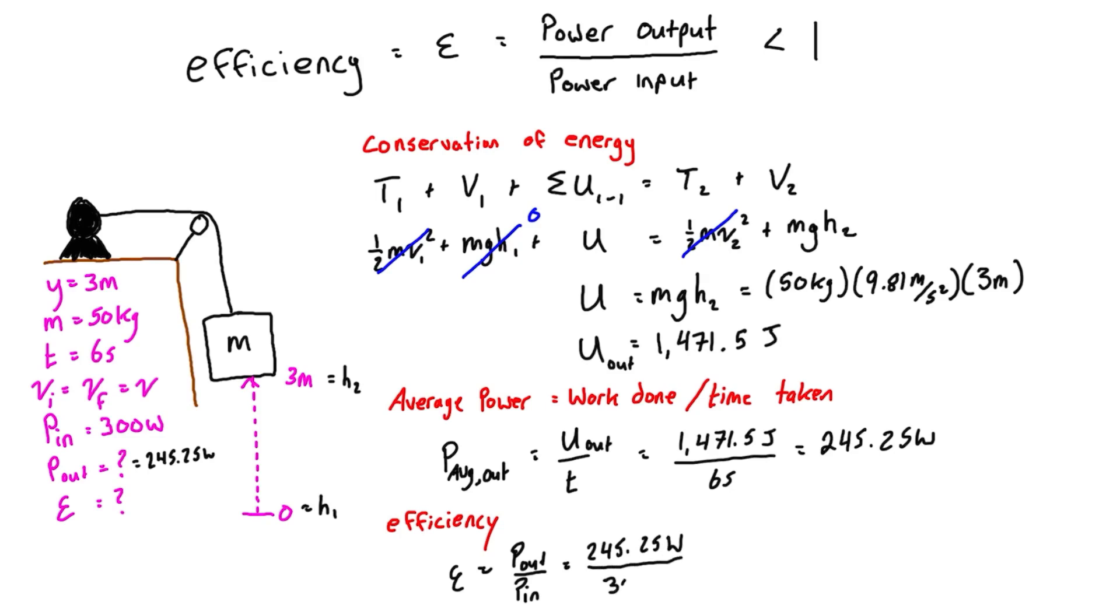That ratio is 0.82. So there we go, that is definitely less than one as expected. The other way we can refer to this is to say that the mechanical efficiency of this motor is 82 percent.